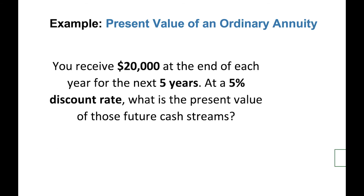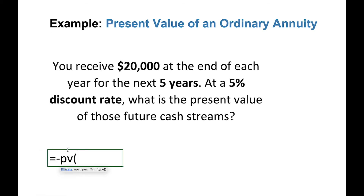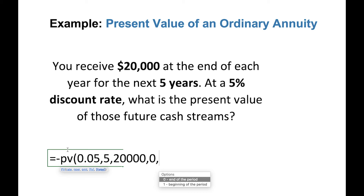Now let's look at an example for the present value of an ordinary annuity. Since this is an annuity, it means there's a regular payment, and it means that the payment happens at the end of the period. So you receive $20,000 at the end of each year for the next five years — the number of periods is five — at a 5% discount rate. In Excel, the rate is 5%, the number of periods is five, and this time we have a payment of $20,000. The future value is zero because we don't have any lump sum at the very end.